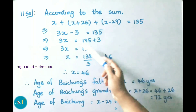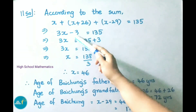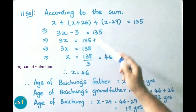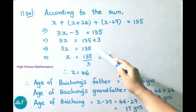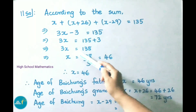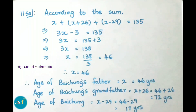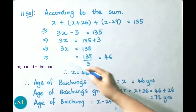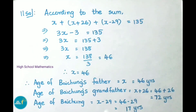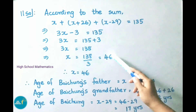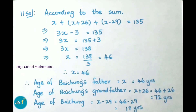Next, 3x equals 135 plus 3, which is 138. Therefore 3x equals 138. x equals 138 divided by 3. Here 3 is multiplying, so on transposing it becomes divided by 3. 3 times 46 is 138. Therefore we got x value as 46.